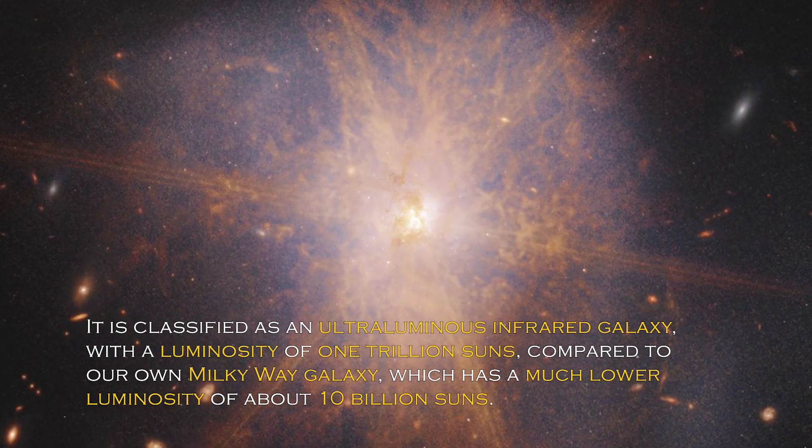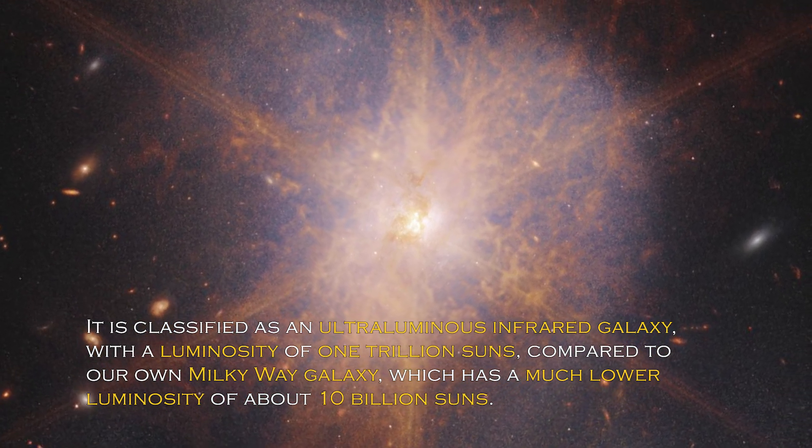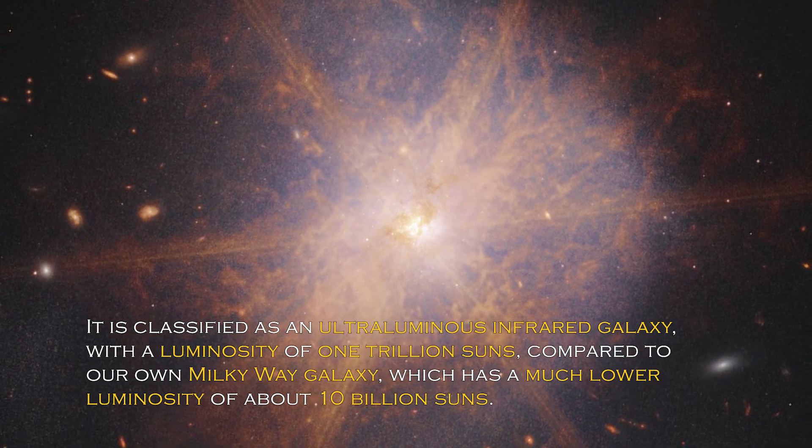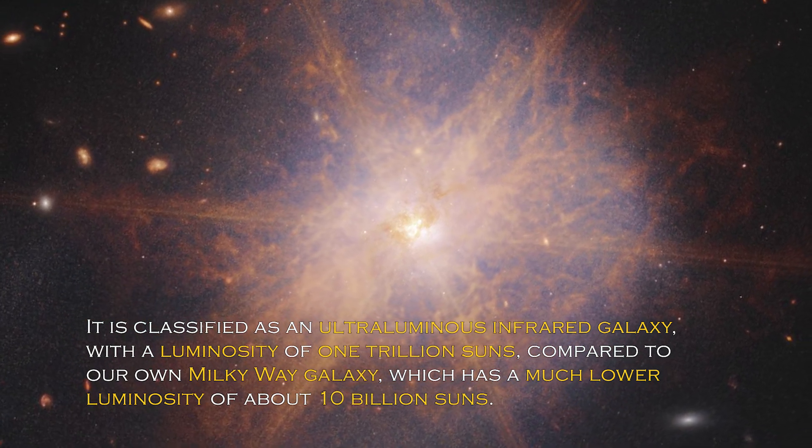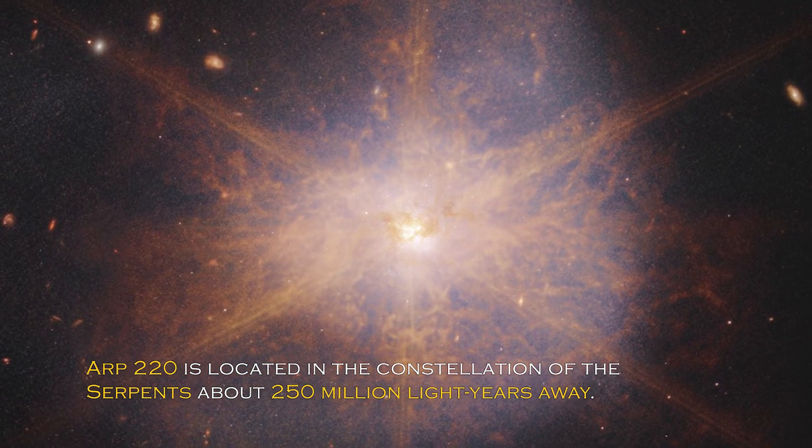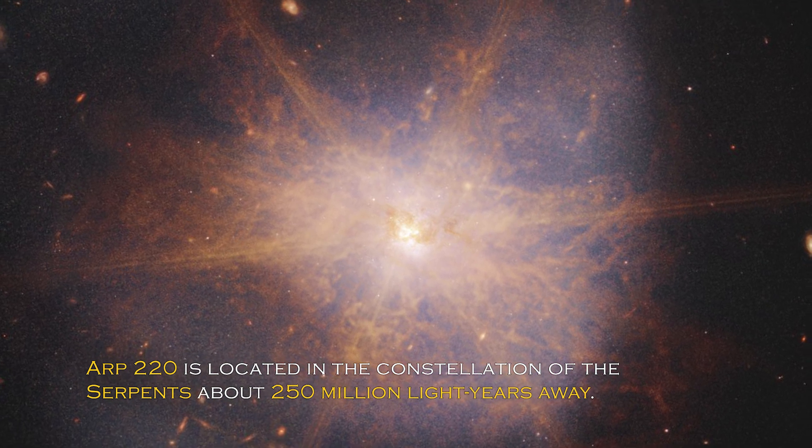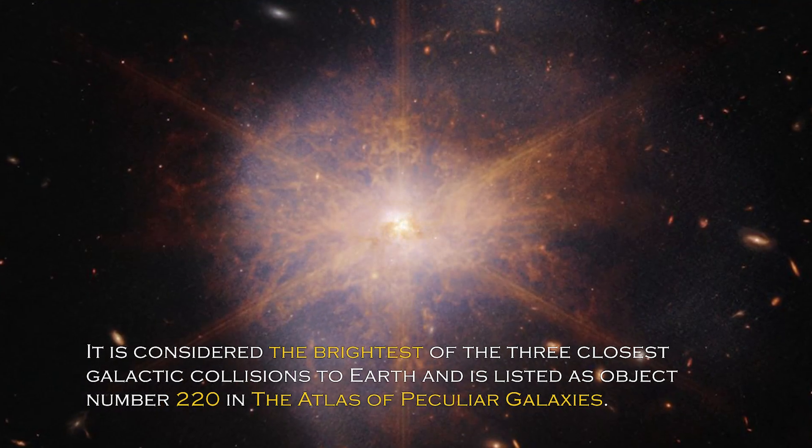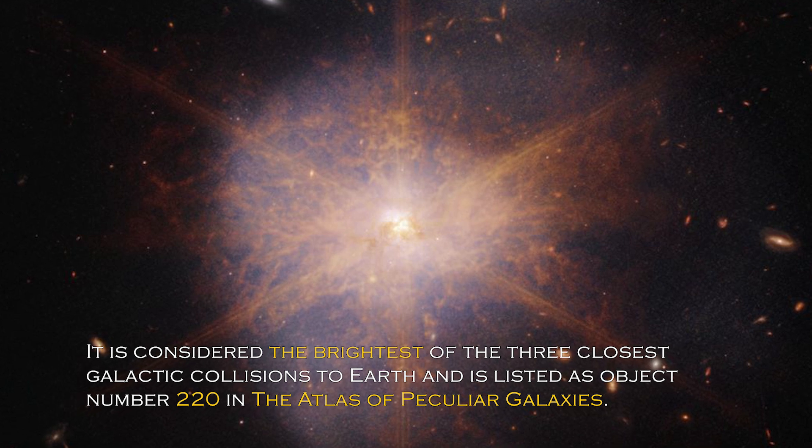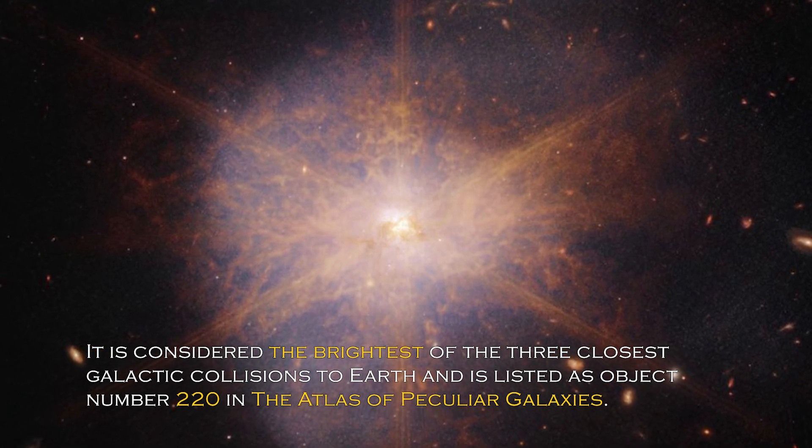It is classified as an ultra-luminous infrared galaxy, with a luminosity of trillion suns compared to our own Milky Way, which has much lower luminosity of about 10 billion suns. ARP 220 is located in the constellation of the Serpents, about 250 million light-years away. It is considered the brightest of the three closest galactic collisions to Earth and is listed as object number 220 in the Atlas of Peculiar Galaxies.